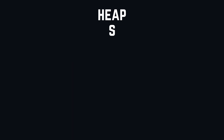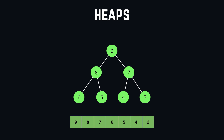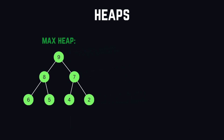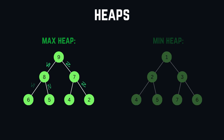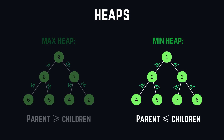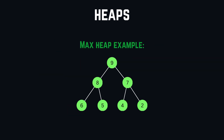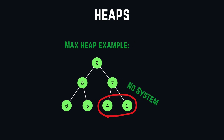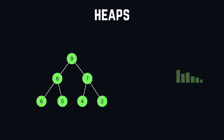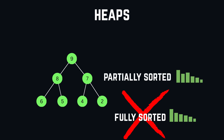Now let's dive into heaps. Heaps are binary tree-like structures that are usually implemented using arrays. We differentiate between max heaps and min heaps. In a max heap, each parent node must be greater than or equal to its children, while in a min heap, each parent must be less than or equal to its children. The heap property states that parents must be bigger or smaller than their children, but there is no guaranteed ordering between siblings — there can always be a bigger element on the left and a smaller one on the right. Because of this, a heap is considered a partially sorted structure.